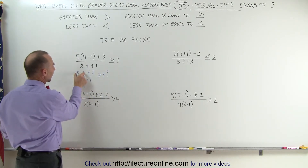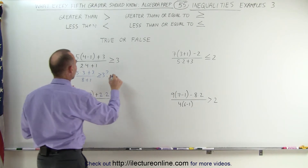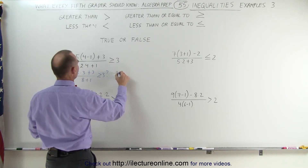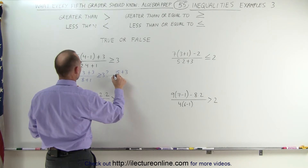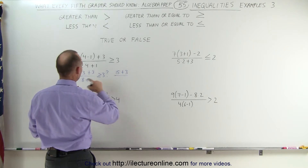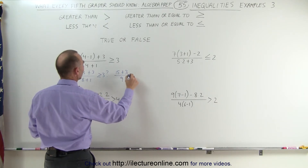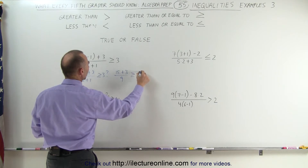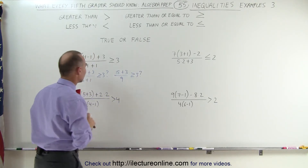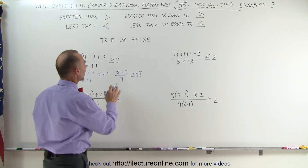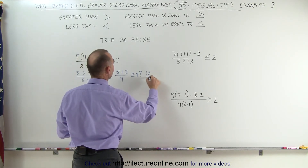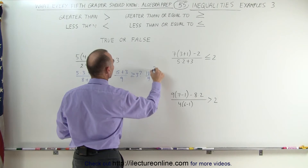Now we need to do the multiplication. That gives us 5 times 3, which is 15, plus 3, divided by 8 plus 1, which is 9. Is that greater than or equal to 3? Adding the numerator together gives us 18 divided by 9. Is that greater than or equal to 3?